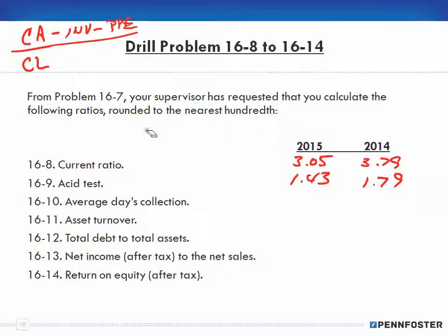Once I have the ratios I can make judgments. With the acid test ratio I'm still in good shape because I have more cash than current liabilities. My current assets are cash, inventory, and prepaid expenses, but when I strip out the inventory and prepaid expenses all I'm left with is cash. So it's: do I have enough cash to cover my current liabilities? If it was a one-to-one ratio or less than one, I wouldn't have enough, but my ratio is greater than one.